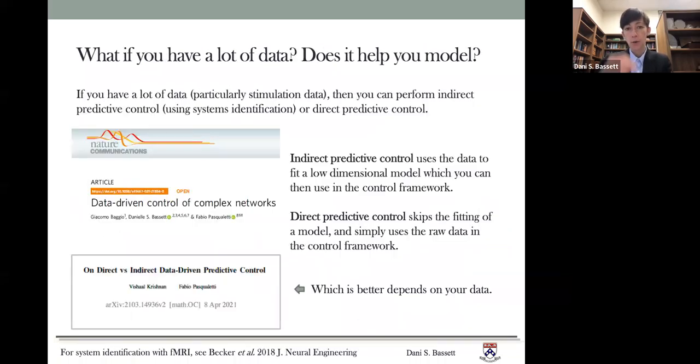Now I want to ask the question of what if you have a lot of data from your system? Does that help you either choose which model to use or develop a new model? So if you have a lot of data, particularly stimulation data, then you can perform indirect predictive control using systems identification or you can use what's called direct predictive control.